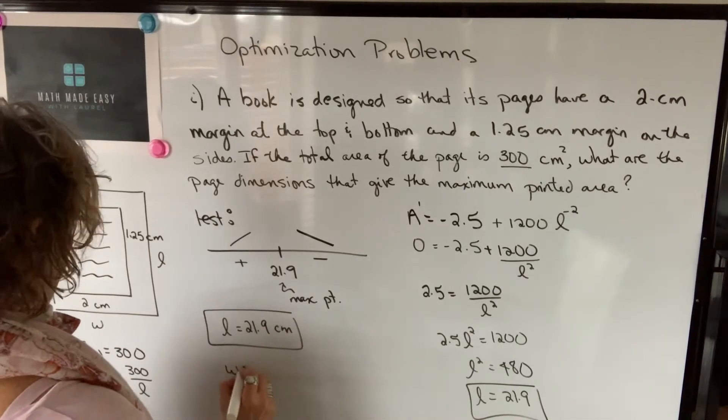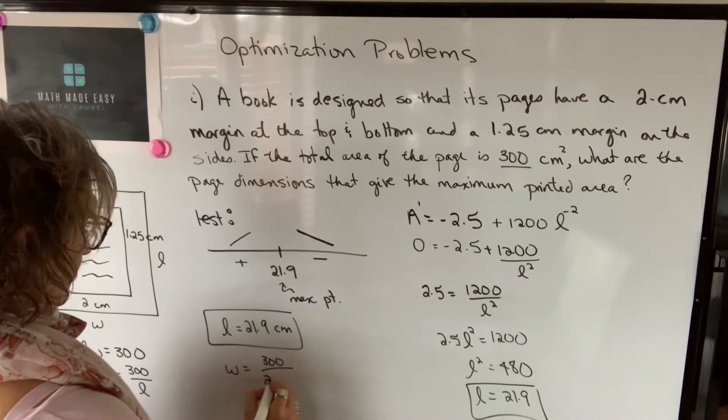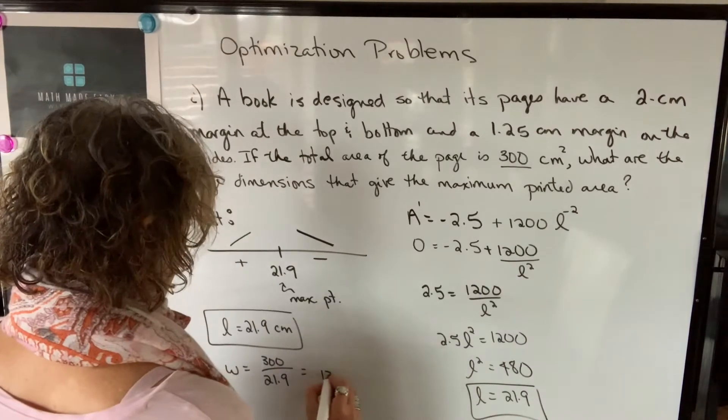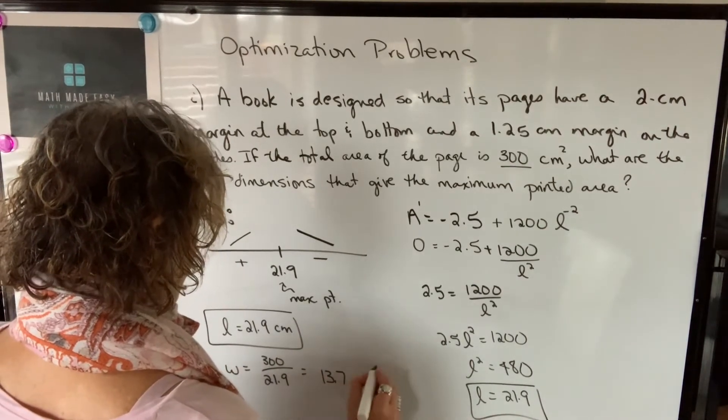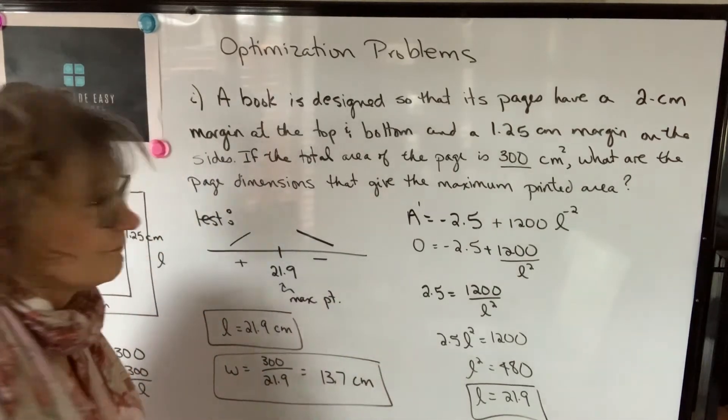And the width will be 300 divided by the length of 21.9, 13.7 centimeters. And we're done.